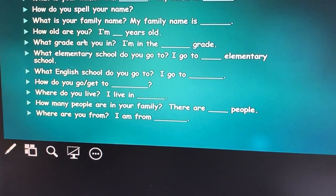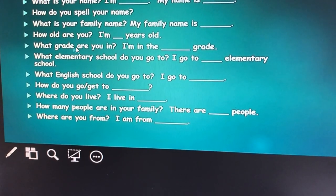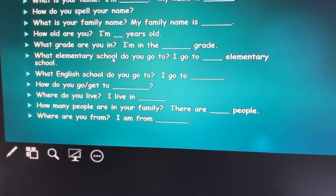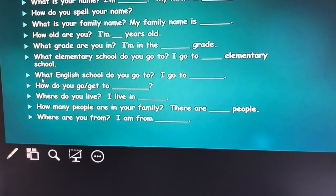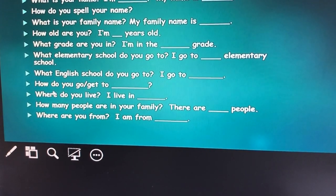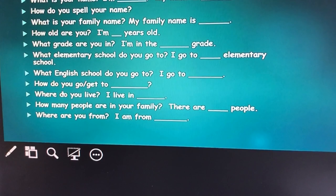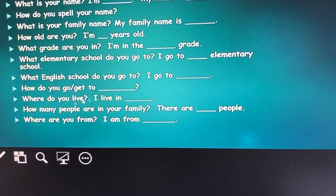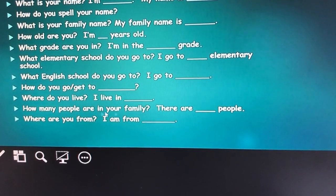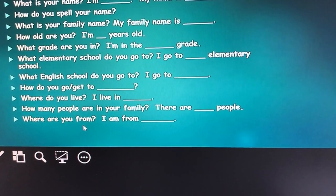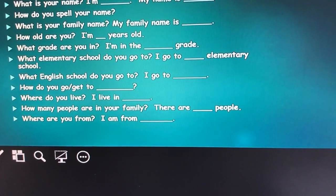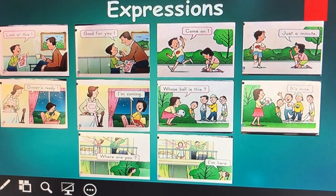How old are you? What grade are you in? What elementary school do you go to? What English school do you go to? How do you go to or how do you get to? Where do you live? How many people are in your family? Where are you from? On to slide two.